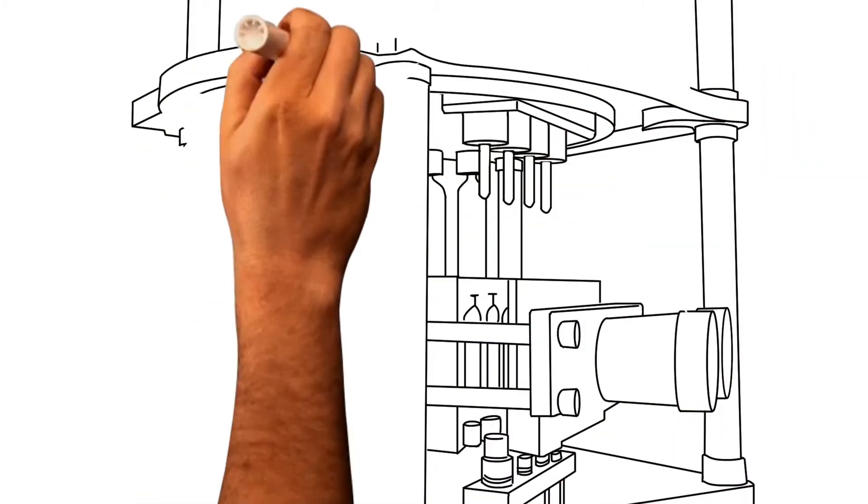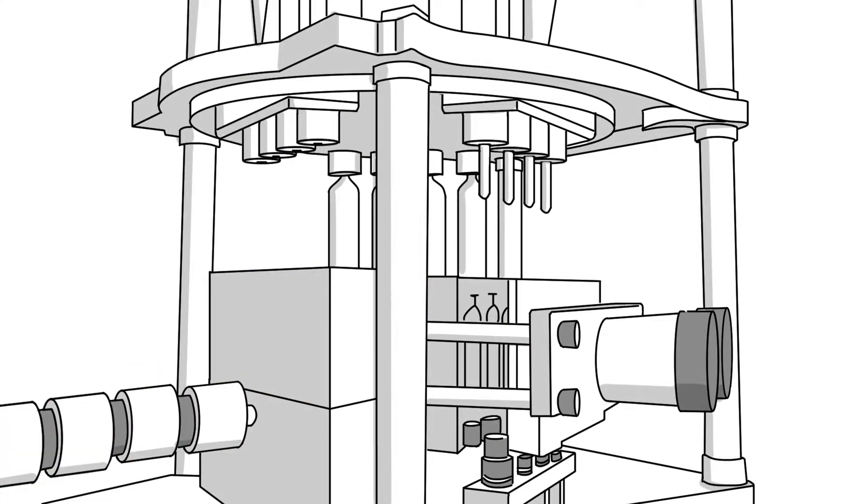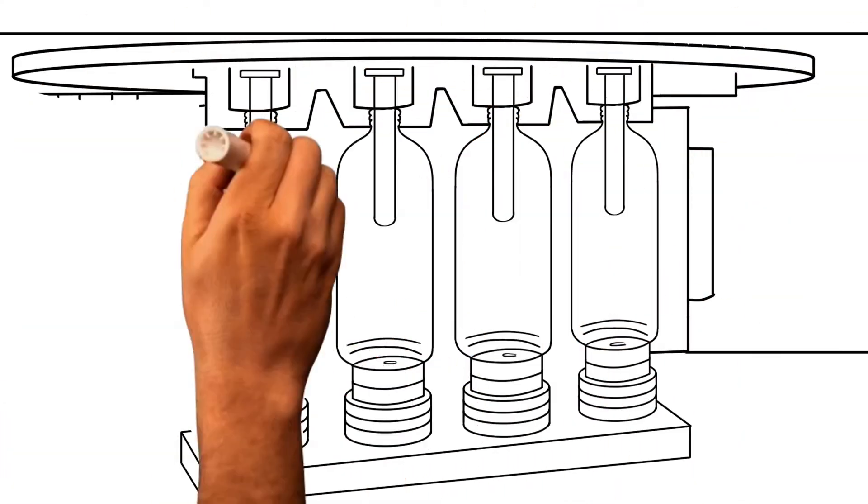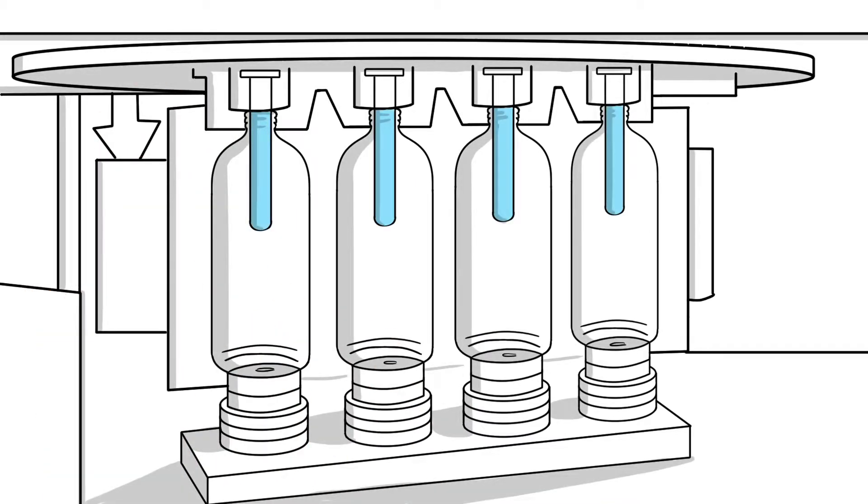The injection blow-molding machine moves the preform to the blow-mold. This is a quick process, as the preform must be molded while it still has the correct heat distribution.